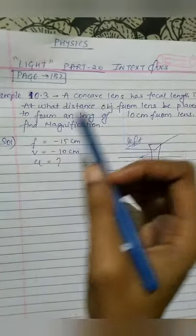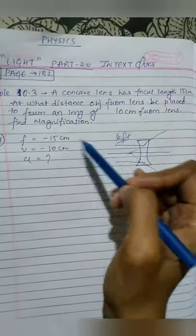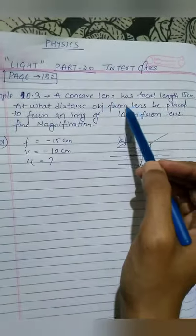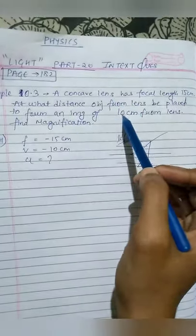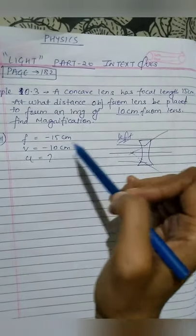What is the focal length? The focal length is 15 centimeter. If this is left, it will be minus 15. The image distance is 10 centimeter. Since the image is on the left side, v will be minus 10.